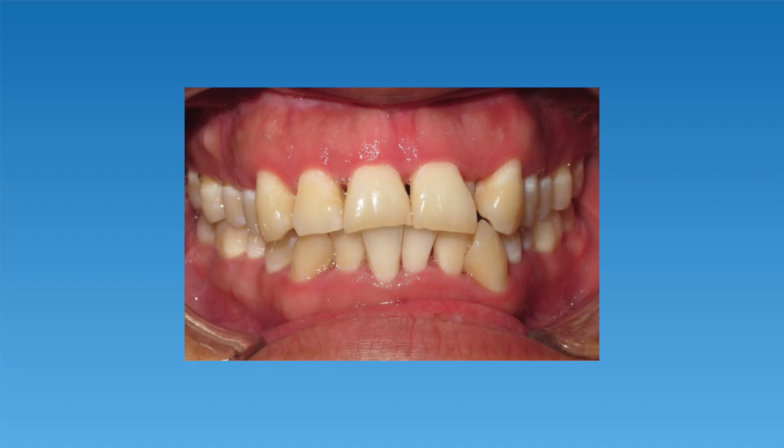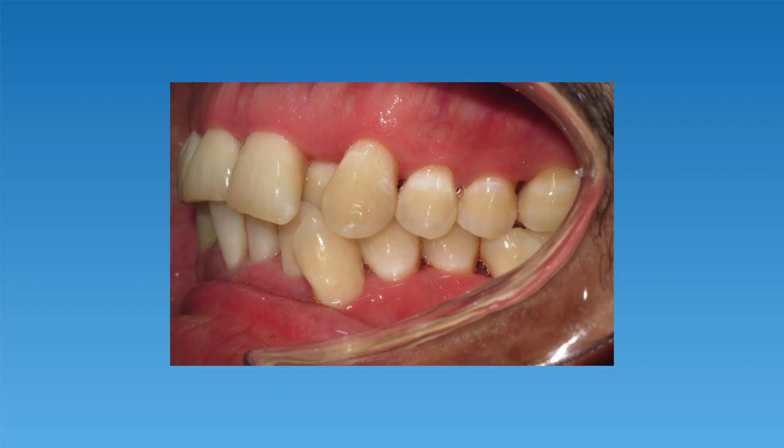Now that we've defined what a posterior crossbite is, let's discuss anterior crossbites. The word anterior means nearer to the front in position, so an anterior crossbite is a crossbite that occurs on the front teeth. When one or more of the top teeth fall inside of the bottom teeth, this is an anterior crossbite. This picture here is a good example of a single tooth anterior crossbite — just one tooth on the upper arch falls behind the teeth on the lower arch.